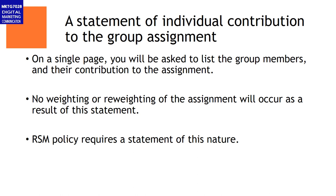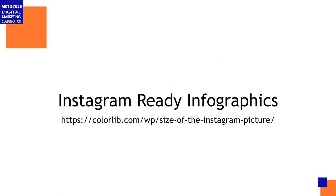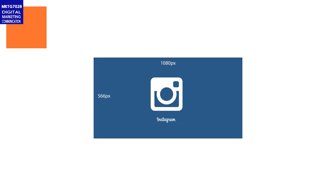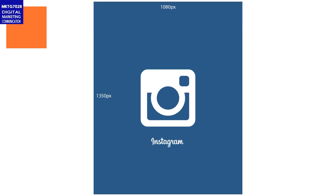The third and final requirement is Instagram-ready infographics. The idea is that I want a visual summary of your 2,000 words done as a single image. Instagram-ready sizes are: square 1080 by 1080, horizontal 1080 by 566, and vertical 1080 by 1350.